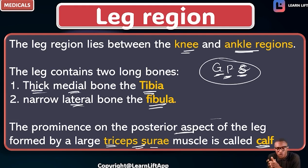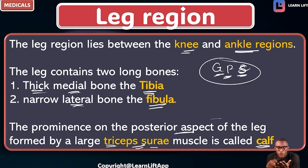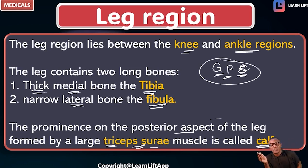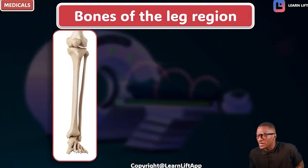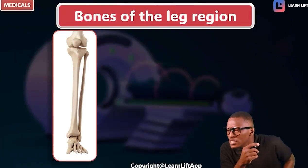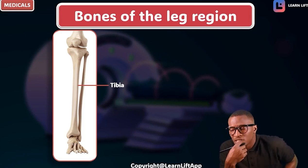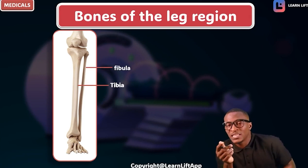What do we say about the leg region? The leg region lies between the knee and the ankle. It contains two long bones — one is thick, the other is thin. The thick one is called the tibia while the thin one is called the fibula. The tibia is medial while the fibula is lateral. Looking at the diagram: the thick bone is the tibia and the thin bone is the fibula.